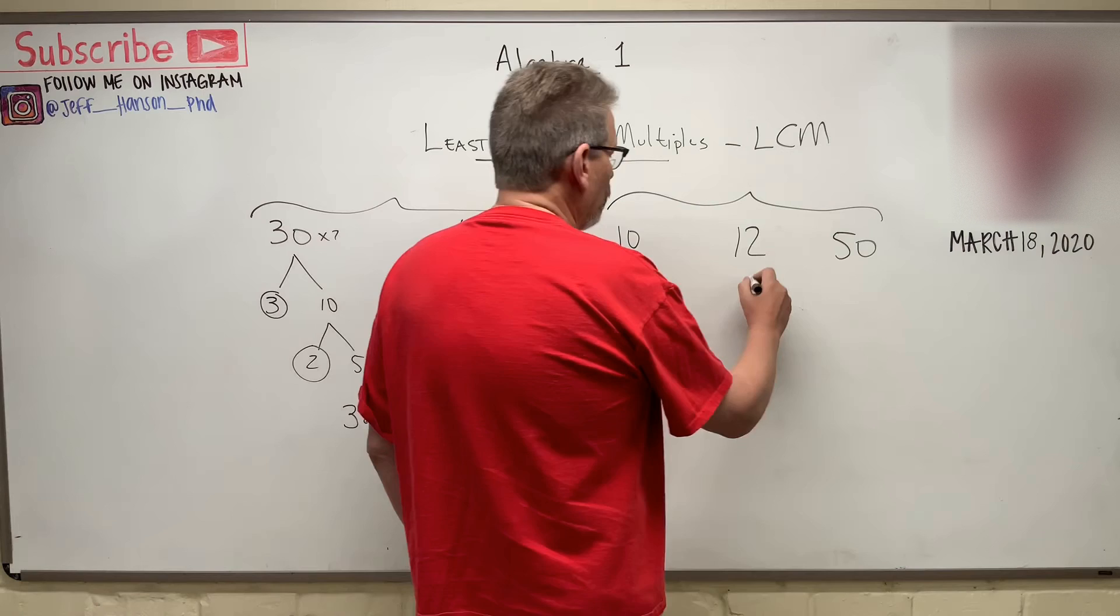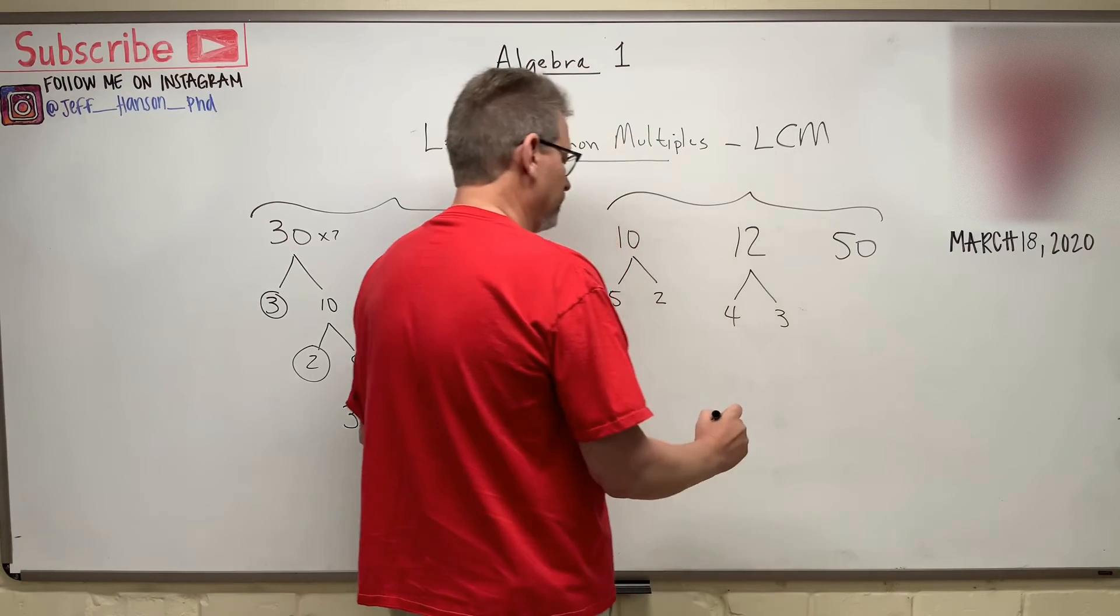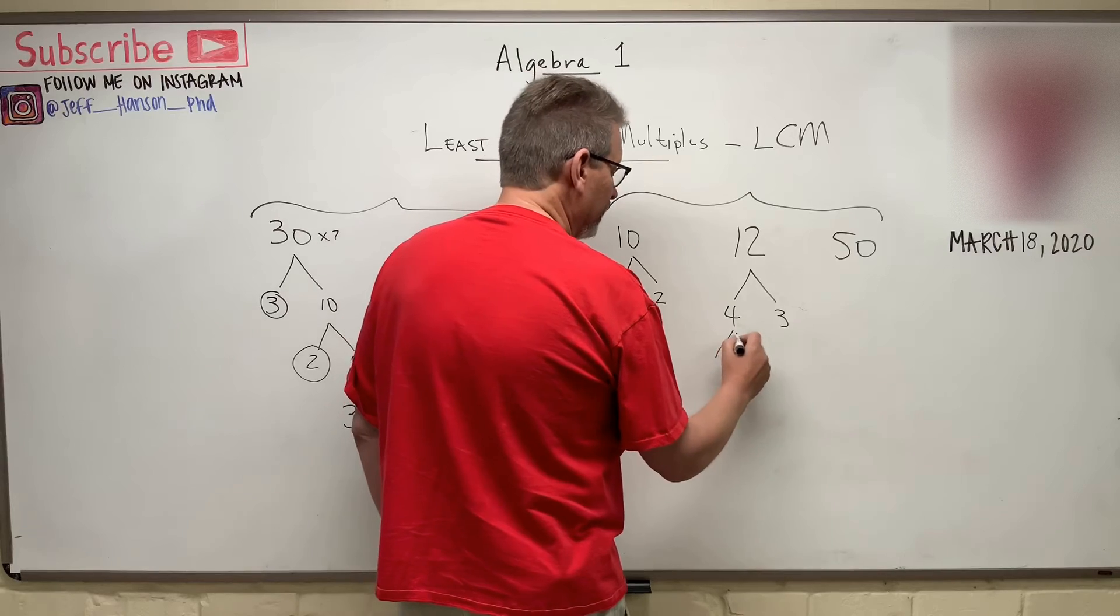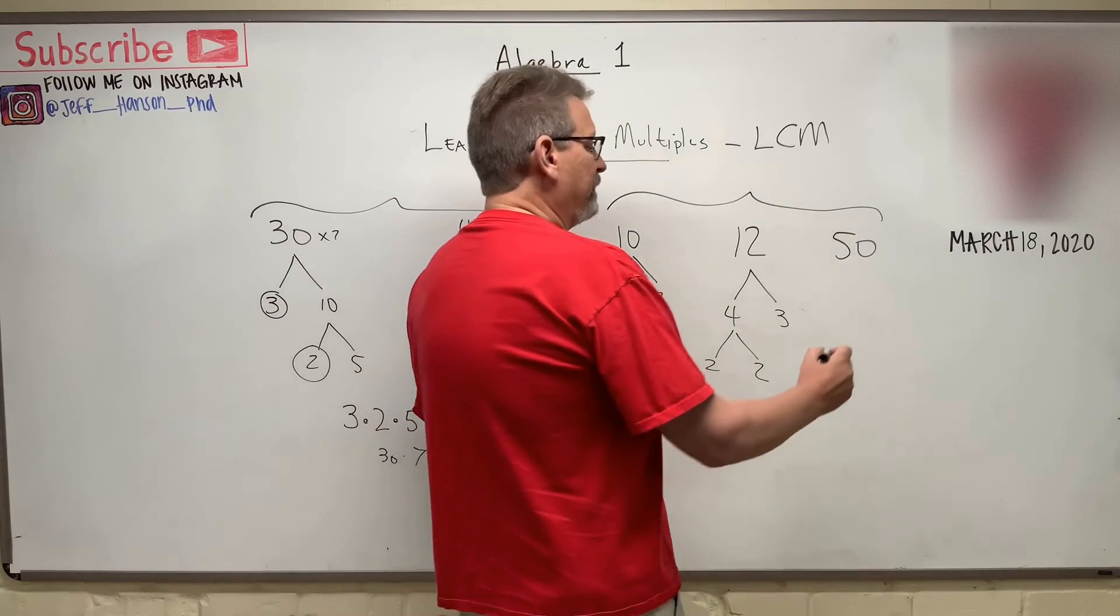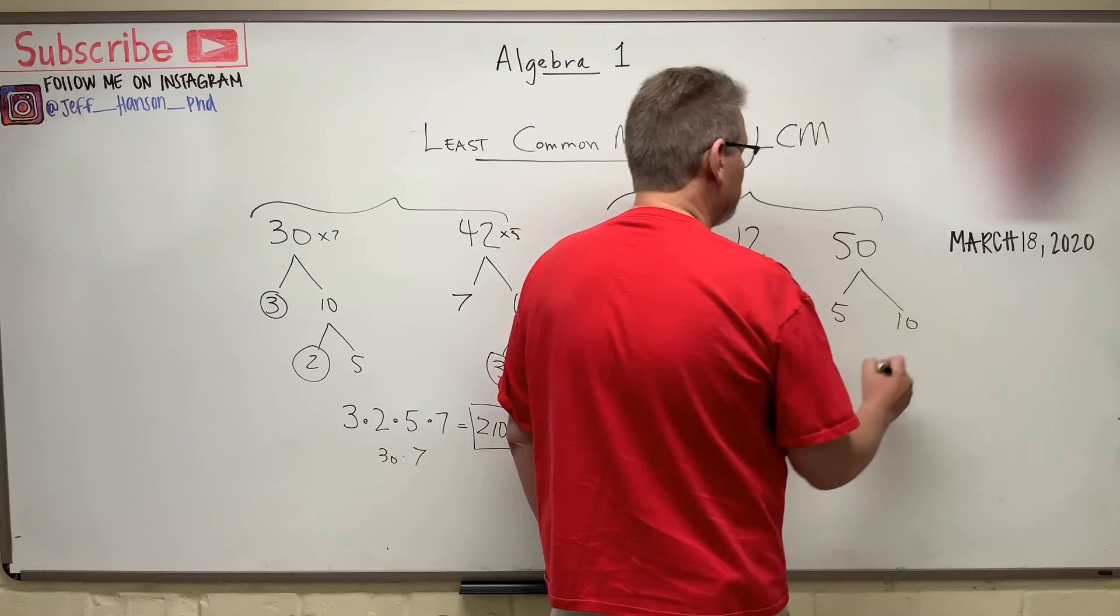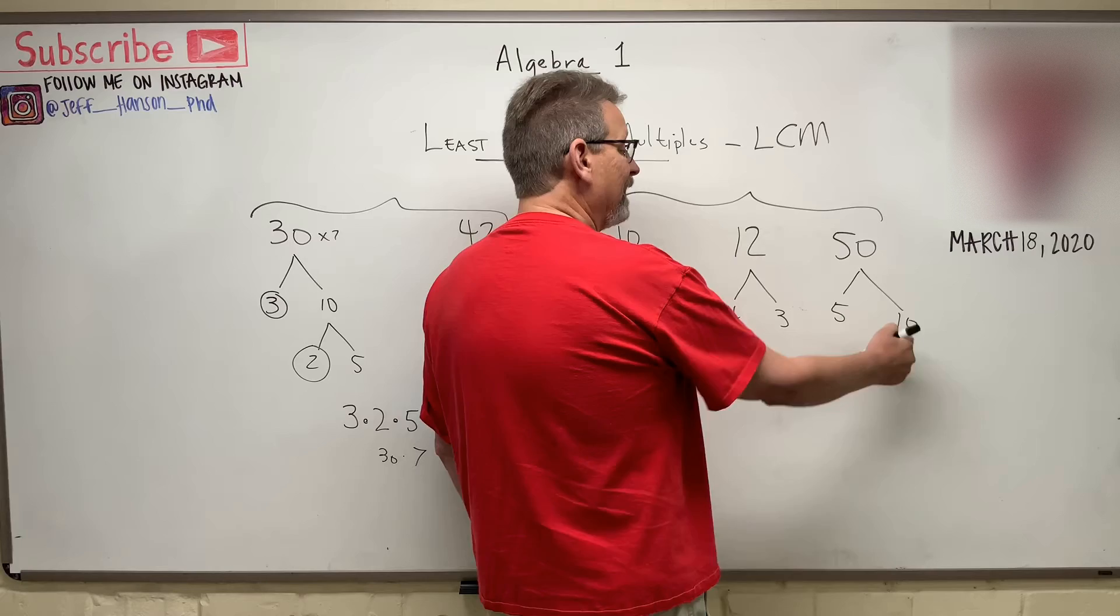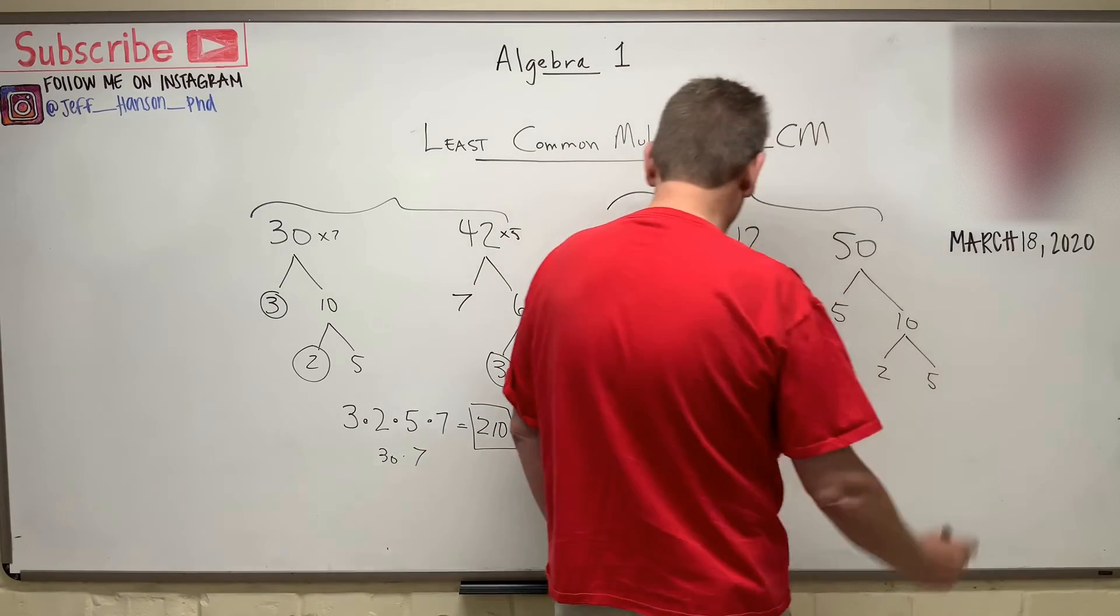The 12, how about a 4 times a 3? And 4 is factorable again, isn't it? That's a 2 times 2. And then the 50, factor that guy. So that's 5 times 10. 5's prime, but that guy is factorable. Again, 2 times 5.